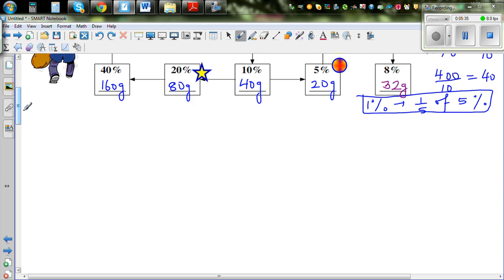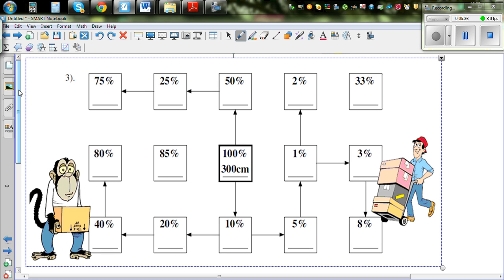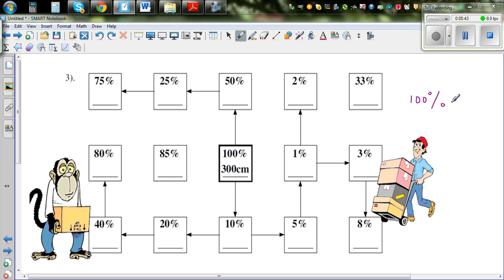Now this is a challenge I want you to do. The next page. I would like you to do this yourself. So what's given is 100% is given to be 300 centimeters. So you have to use this information to find all others. So let me do. So 50% is half. So then it will divide by 2. 10% is 1/10. So divide by 10. And so on.